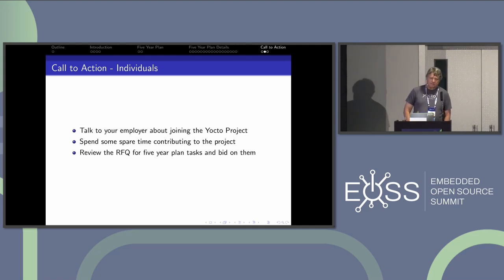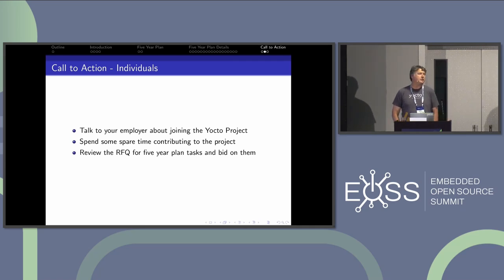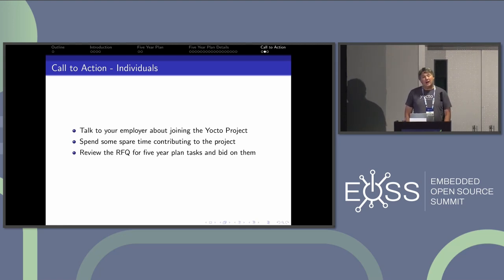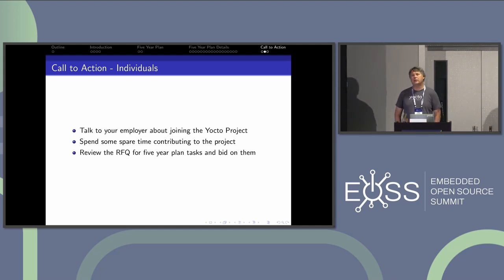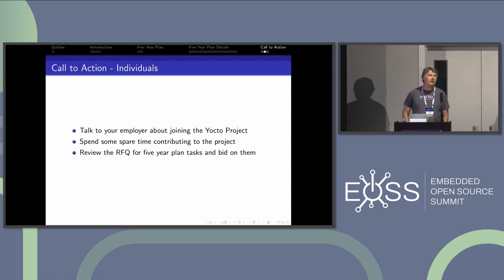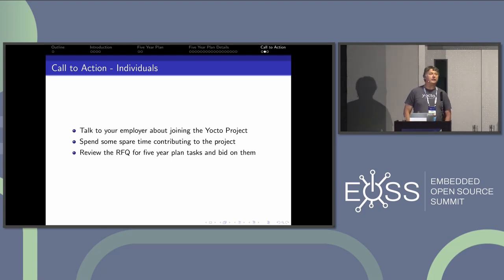For individuals: talk to your employer about joining the Yocto project — it's probably easier at smaller companies. Talk to them about joining or talk to one of us and ask us to help you. If you have extra cycles at work, talk to your employer about upstreaming some of your stuff. If you have ideas, share them at a Yocto project developer day — let us know what you're working on, what you've prototyped, and maybe you can get some help. And if you need some money, look at the RFQ and bid on things.